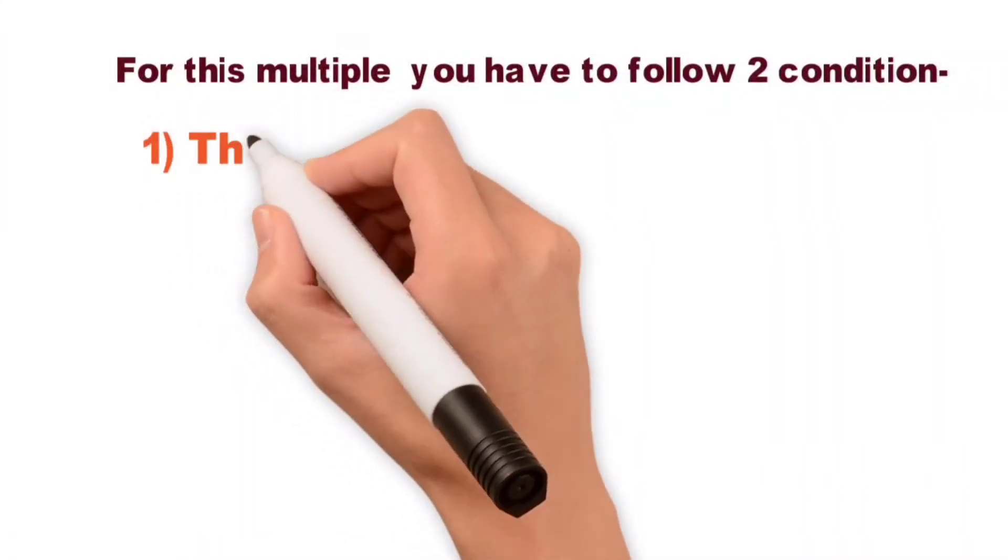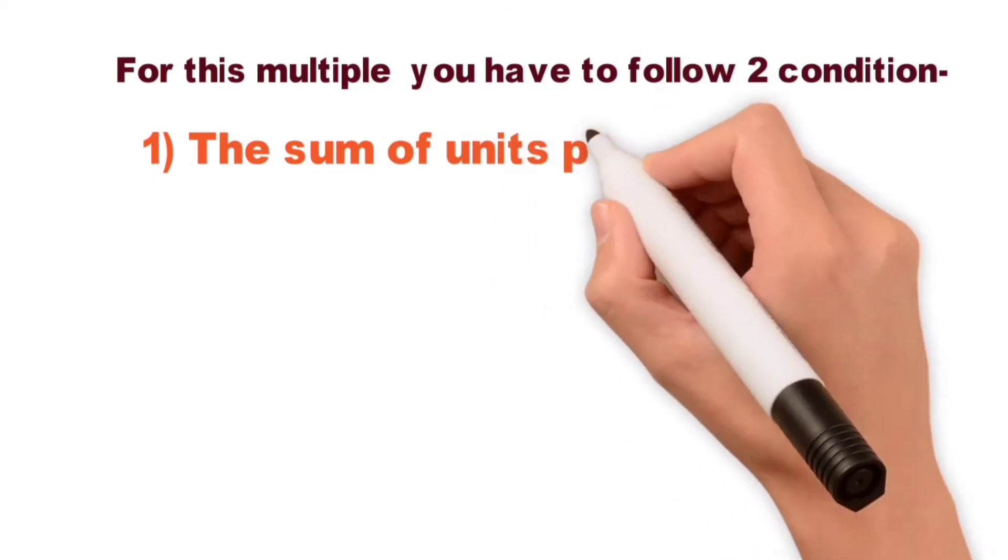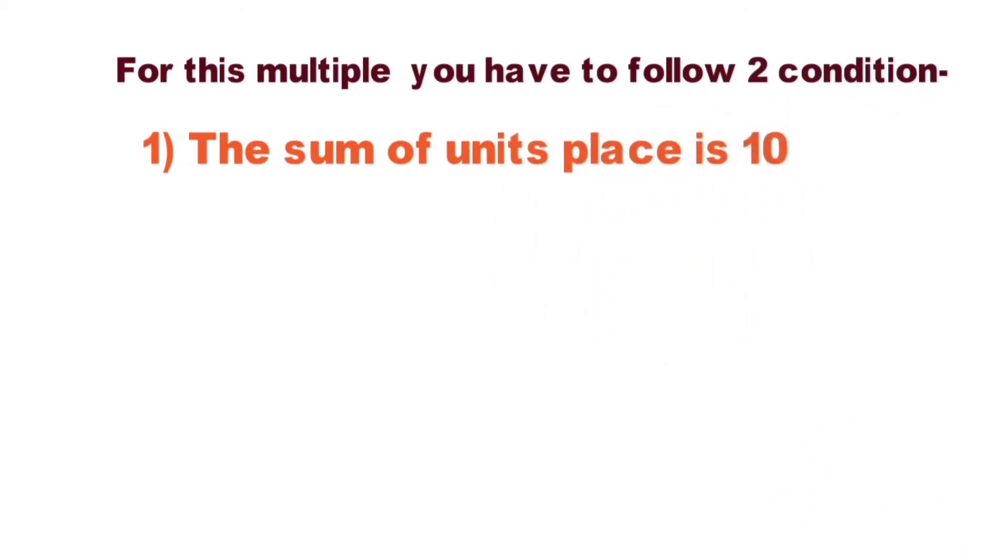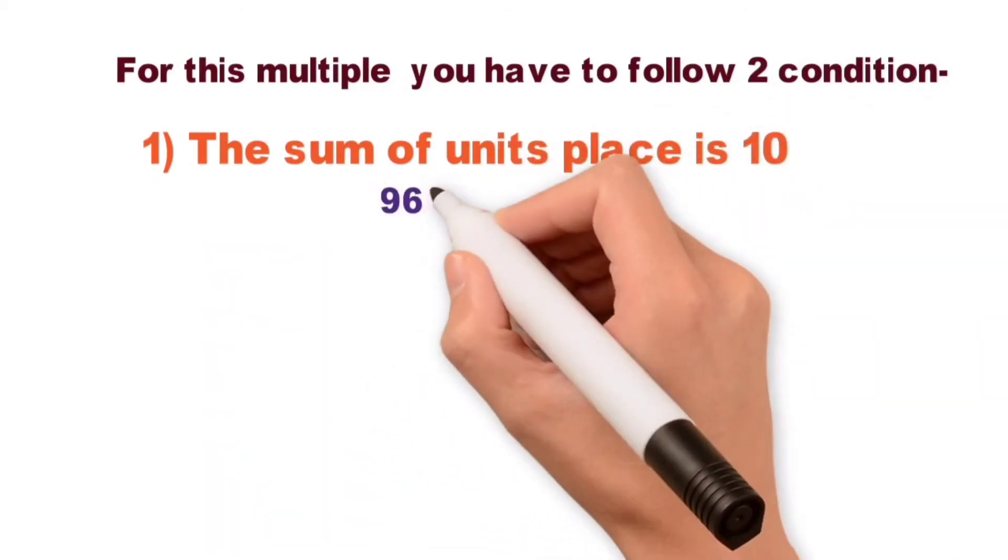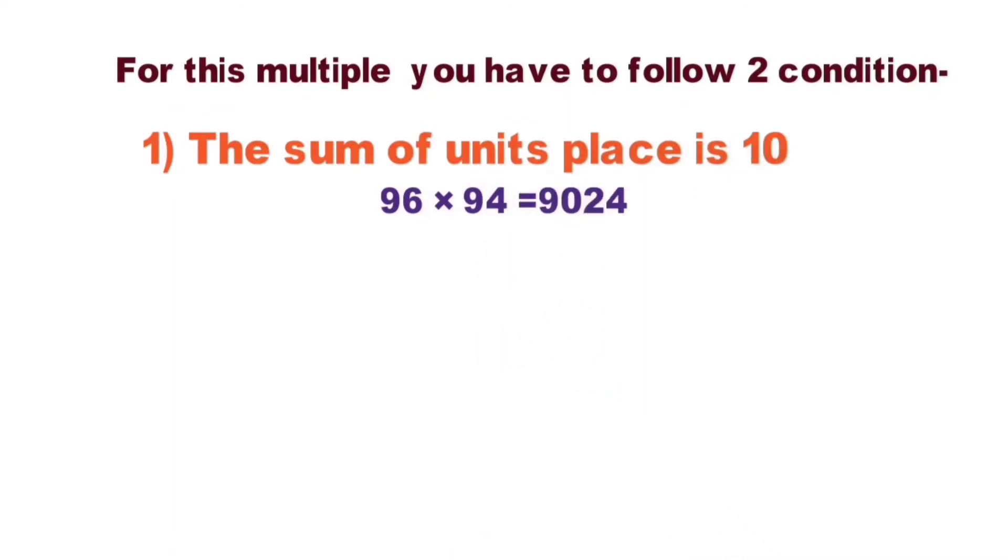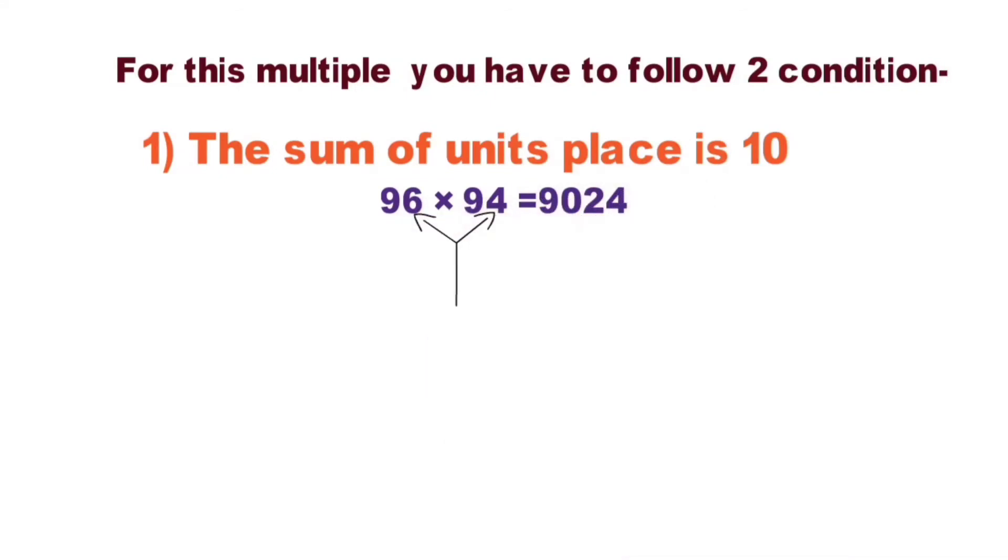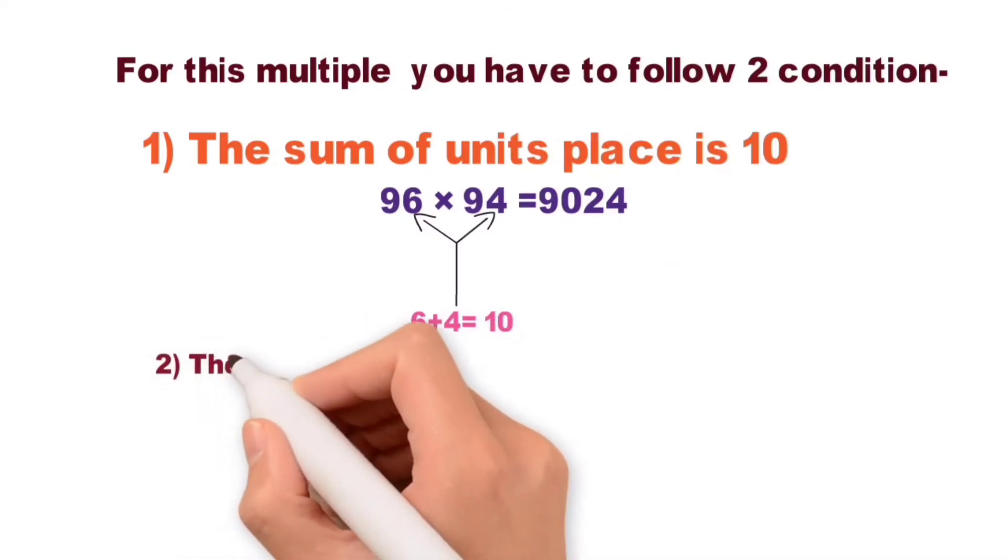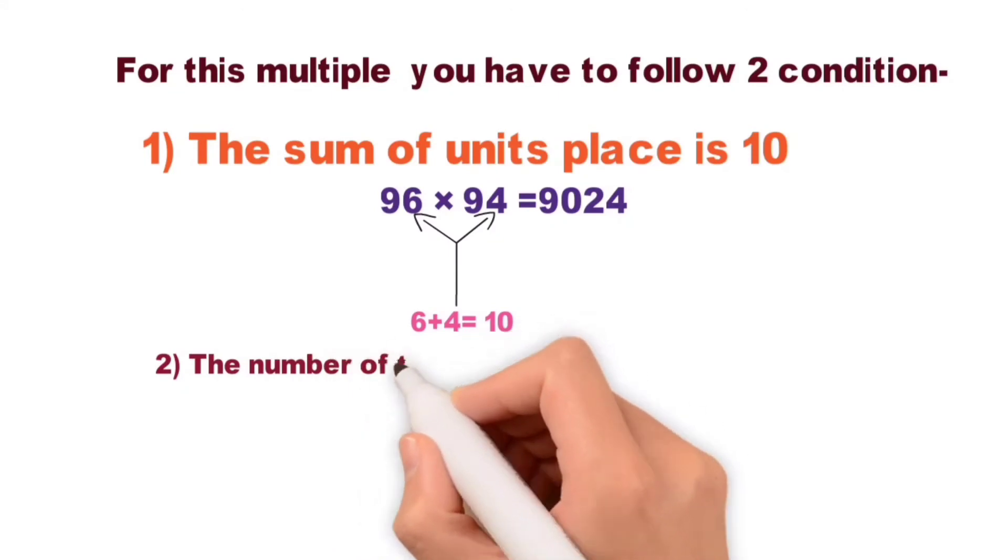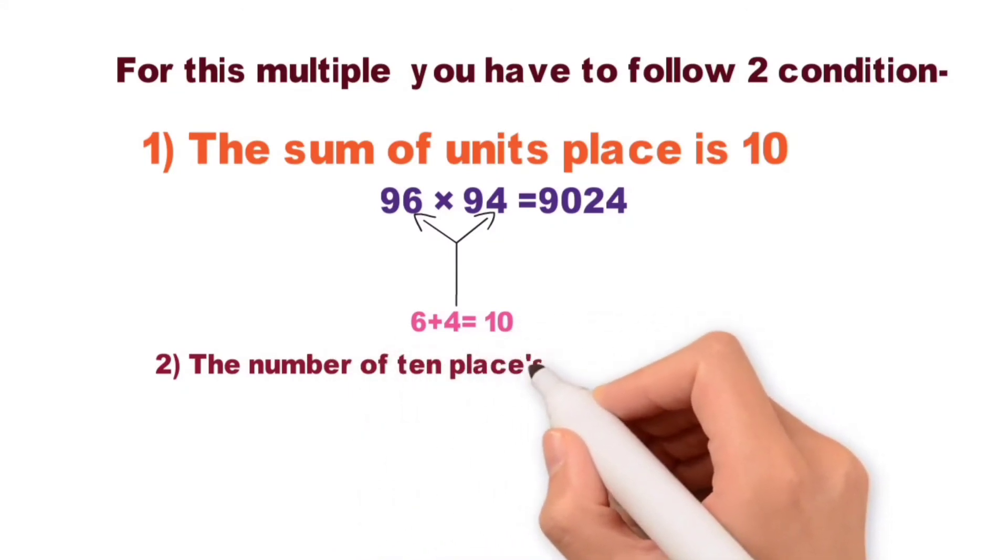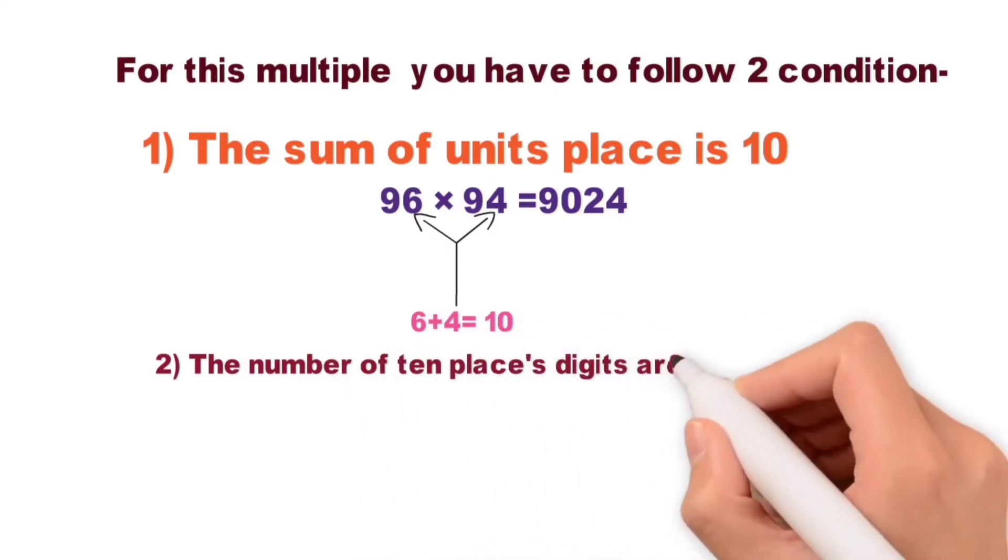For this multiple you have to follow two conditions. Number one: the sum of units place is 10. Example, here unit place numbers are 6 and 4, so the sum of units place 6 plus 4 equal to 10.